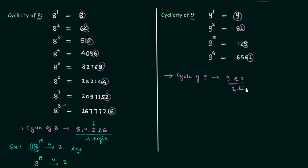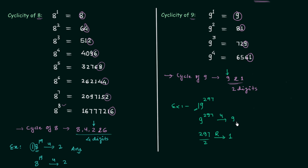There are 2 digits in the cycle of 9, and we will solve one example based on cyclicity of 9. In this example the number is 19 and the power is 297. We will do the same thing — we will neglect the 1 and only take 9 raised to power 297. Two digits are there in the cycle, so we will divide 297 by 2 and the remainder will be 1. When the remainder is 1, it means 9 will be there at the units place. So 9 raised to power 297 will have 9 at the units place, and this implies 19 raised to power 297 will also have 9 at the units place.